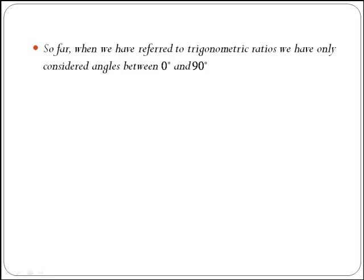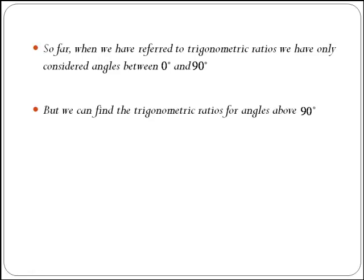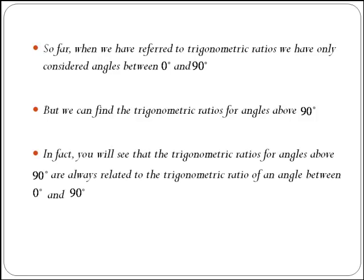So far, when we have referred to trigonometric ratios, we have only considered angles between 0 and 90, but we can find trigonometric ratios for angles above 90. You will see that trigonometric ratios for angles above 90 are always related to the trigonometric ratio of an angle between 0 and 90. We will start by defining what is a quadrant.